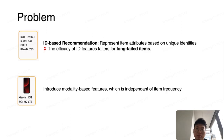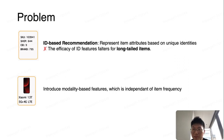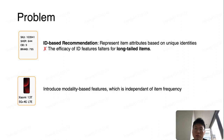The paper addresses the cold start problem in industrial CTR prediction models, which are constructed based on the unique IDs representing items. These IDs are converted into dense vectors through a randomly-initialized embedding model. The model will learn the relationships between items during training.